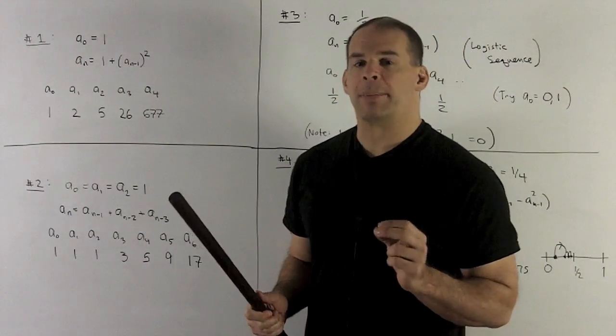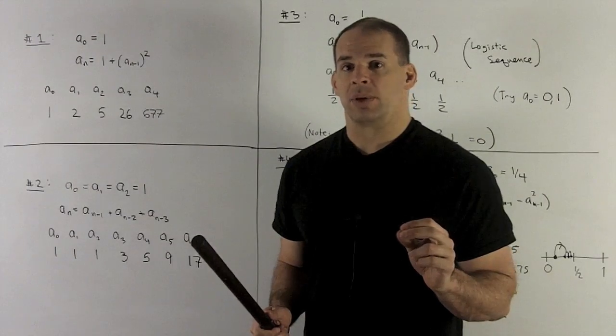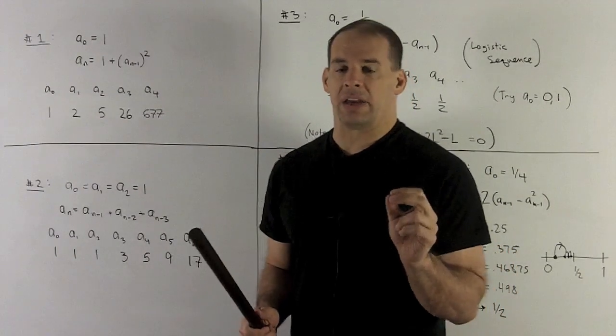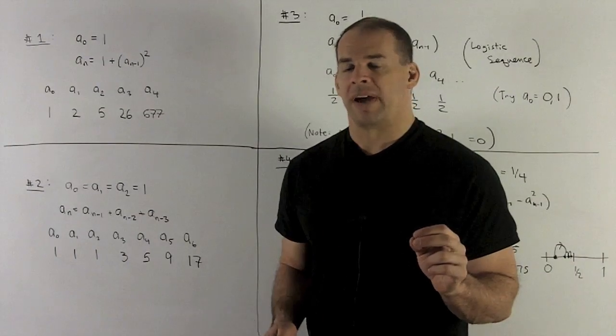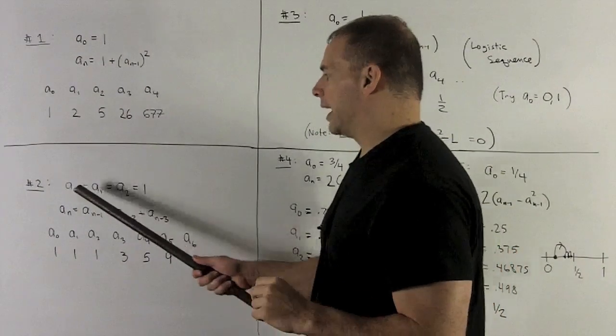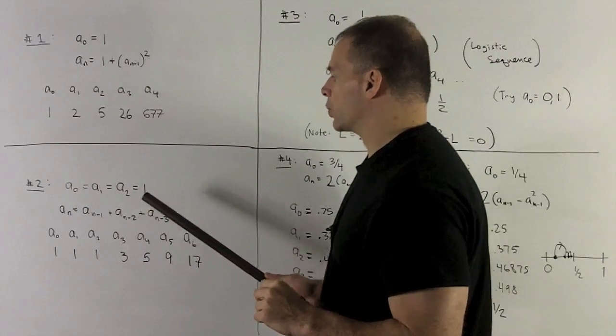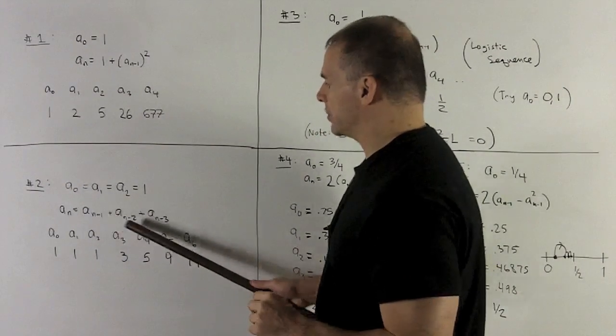Okay, for another example, this is a little generalization of the Fibonacci sequence. So here, instead of defining our sequence in terms of the 2 that come before it, we're defining it in terms of the sum of the 3 that come before it. So if a₀ equals a₁ equals a₂ equals 1, then aₙ is just sum up the previous 3 terms.